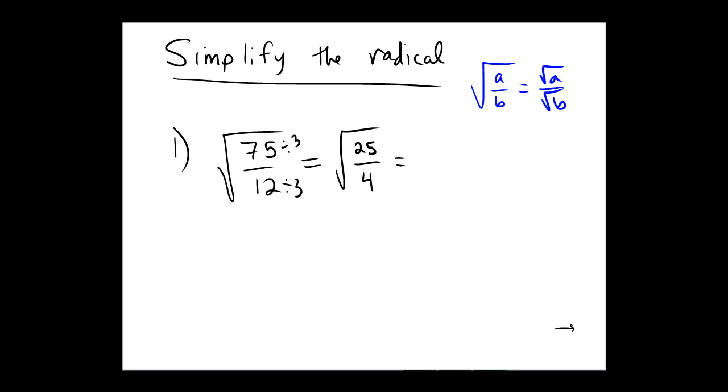Okay, so now according to our rule, the radical of a over b equaling radical a over radical b, we can now see that the radical of 25 fourths would be the same as saying the radical of 25 over the radical of 4.